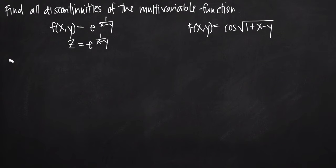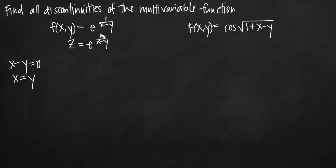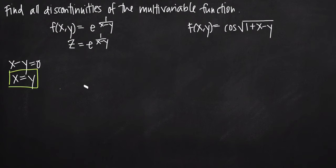So we set x minus y equal to zero, and if we solve this, we get x equals y. So when x equals y, 1 over x minus y is going to be discontinuous, and when that's discontinuous, e to the 1 over x minus y will also be discontinuous. So this function is continuous everywhere except when x is equal to y.